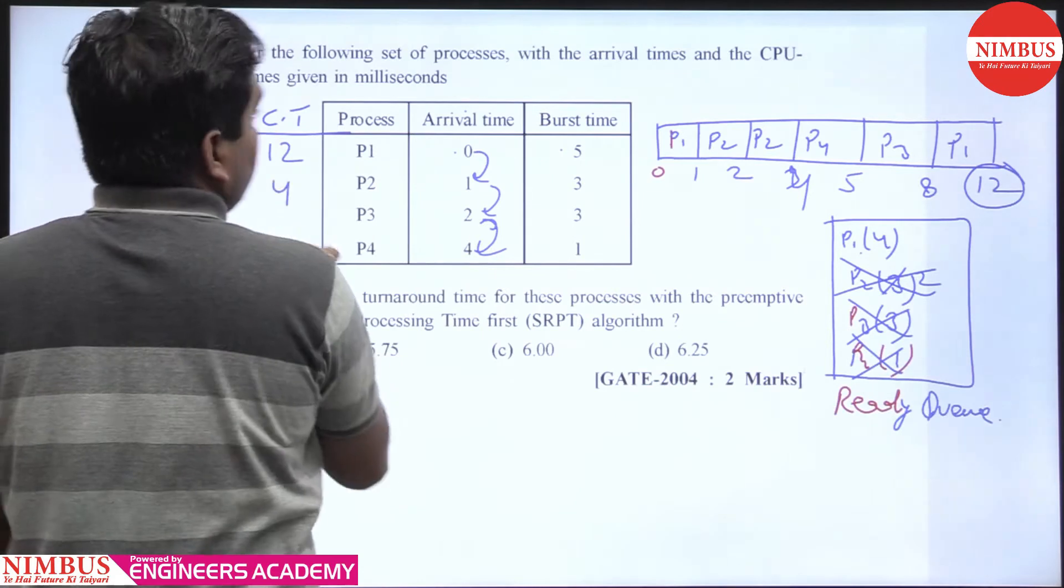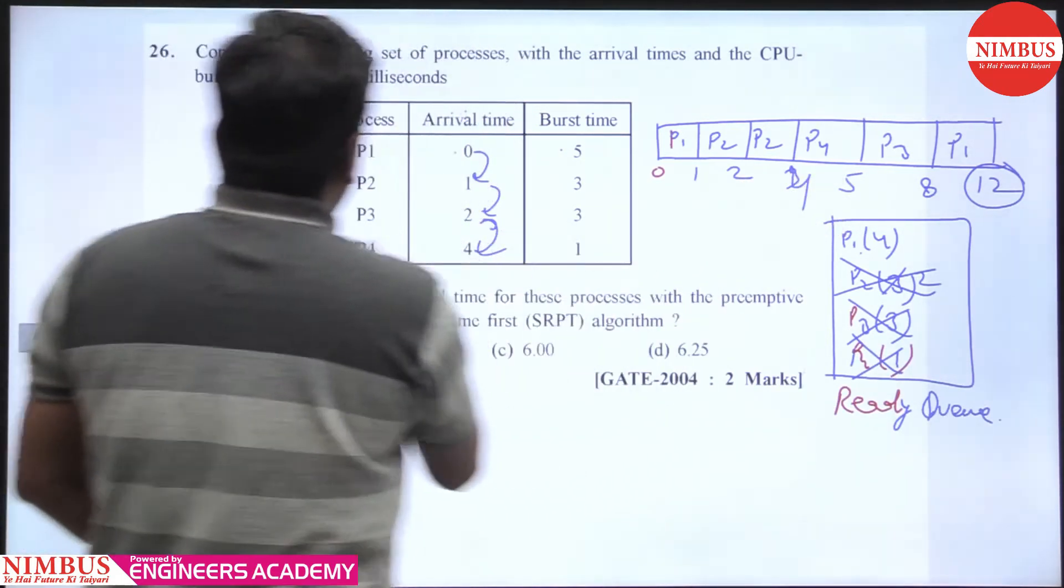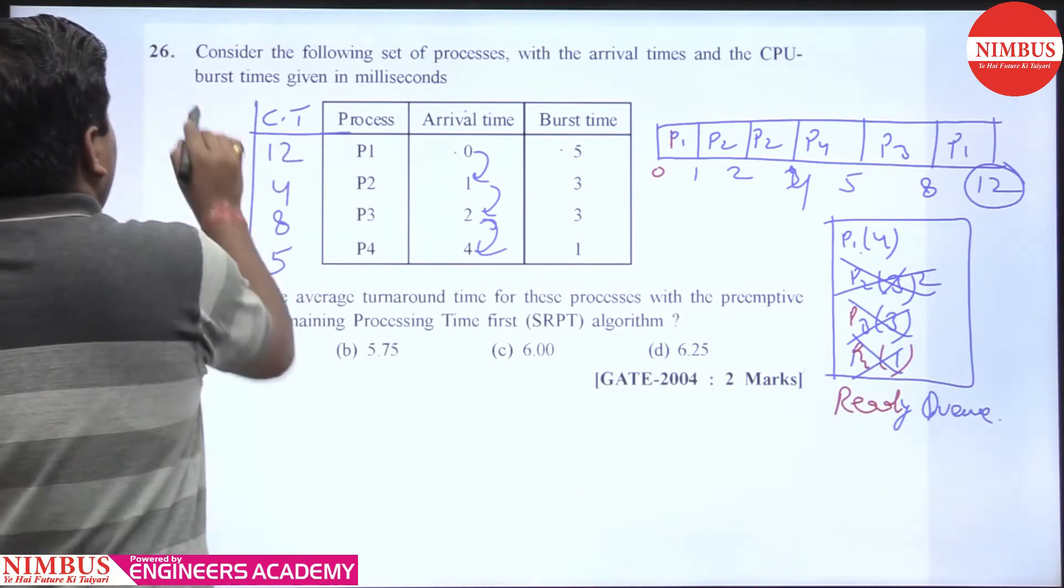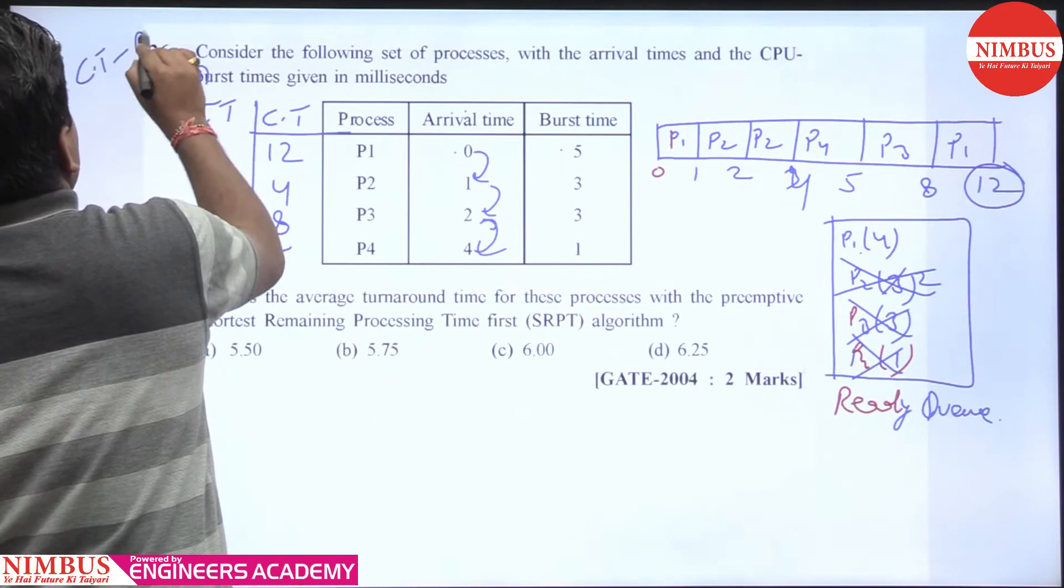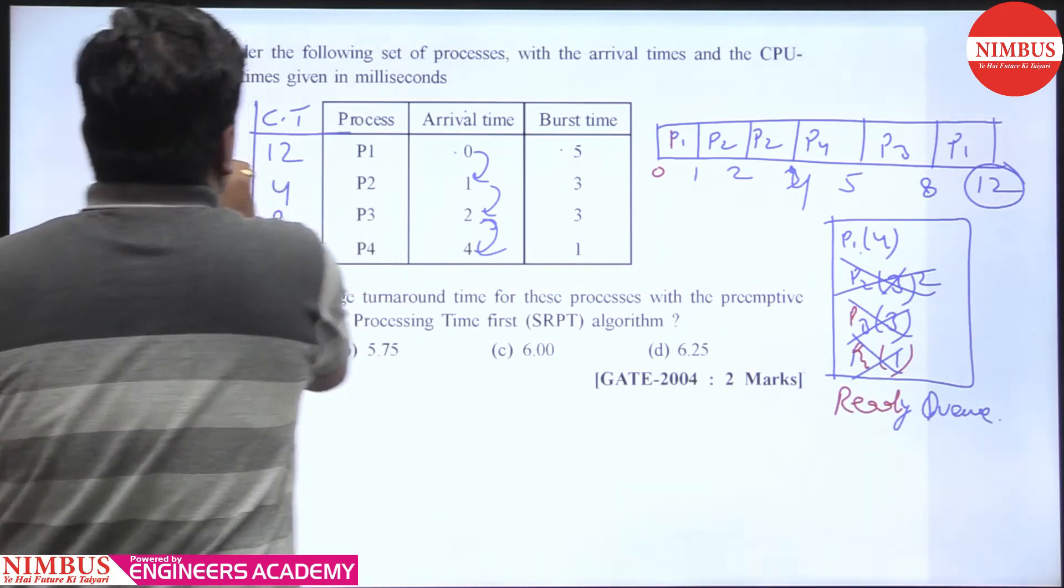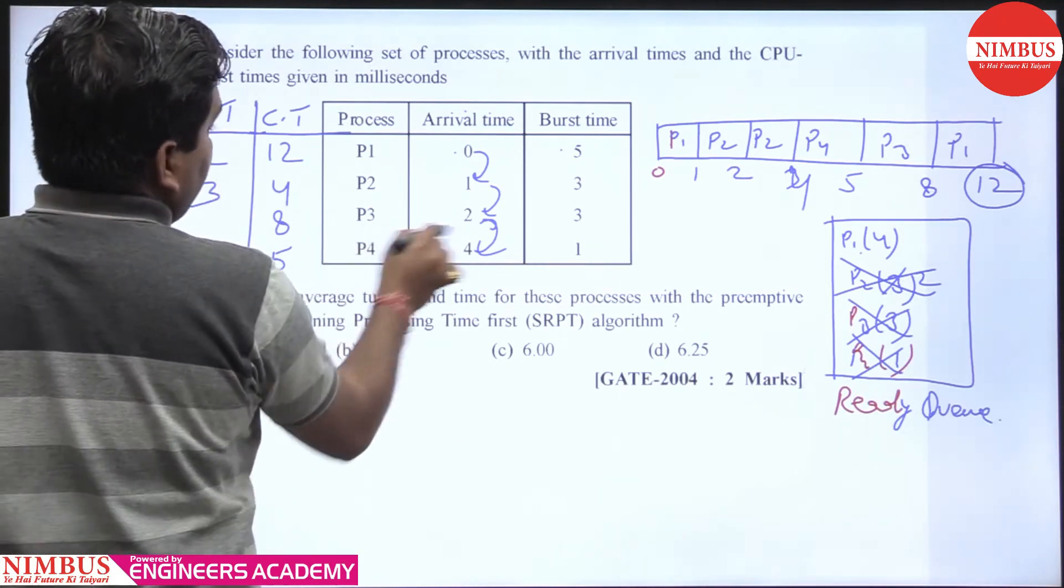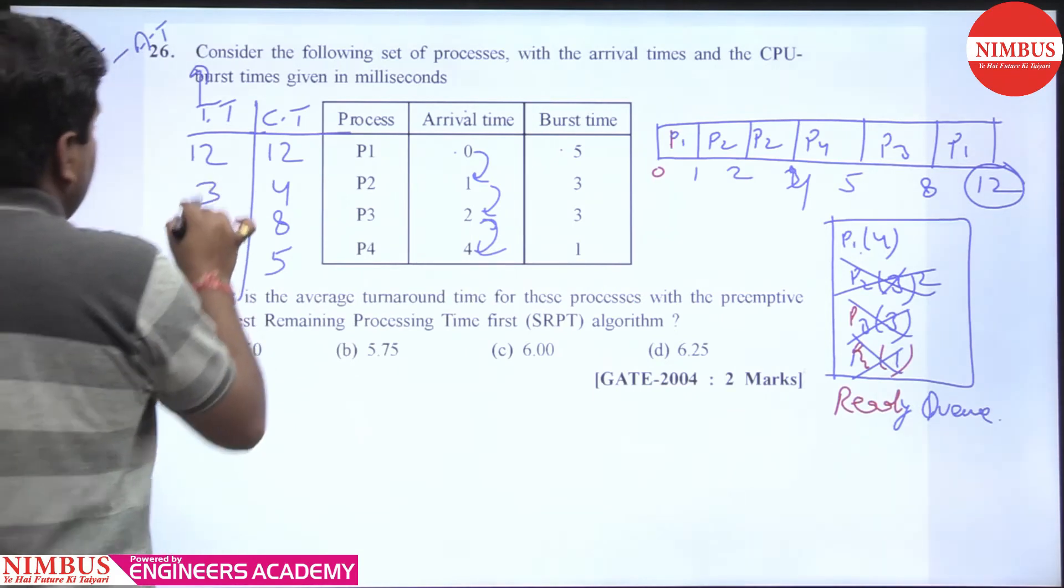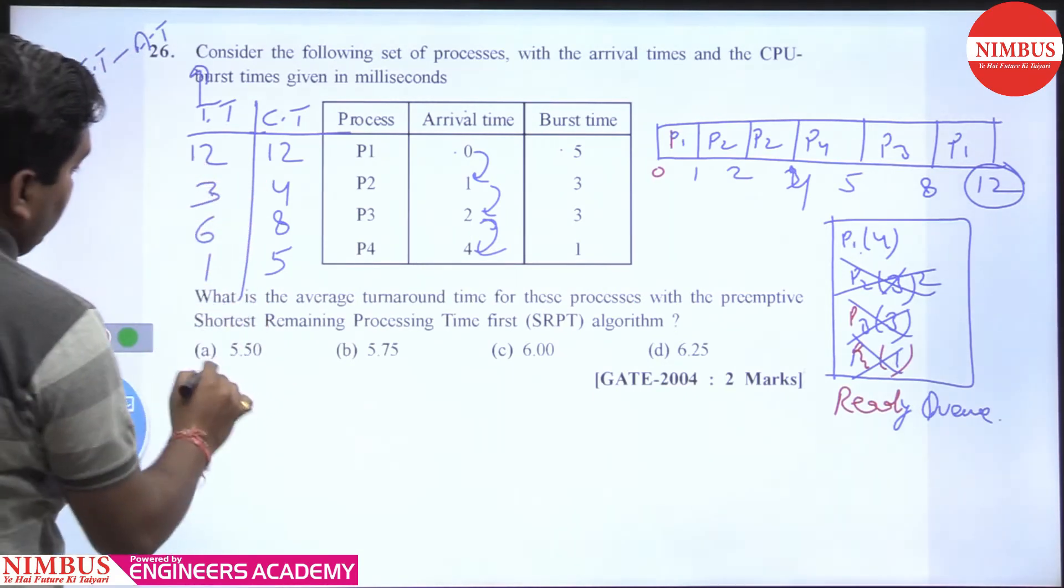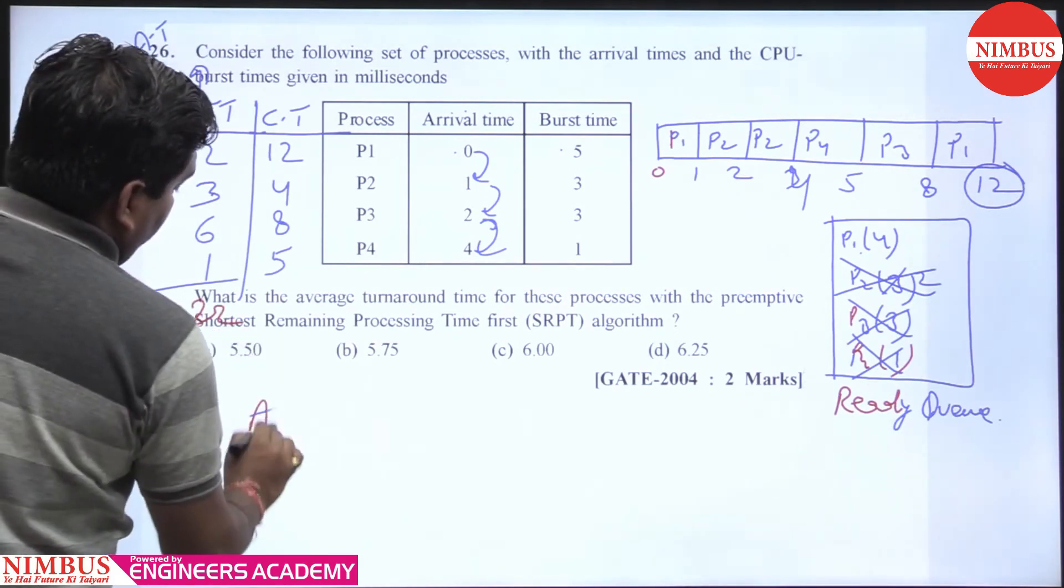What is the arrival time? 12 minus 0 is 12. 4 minus 1 is 3. 8 minus 2 is 6. 5 minus 4 is 1. Then 12 plus 3 is 15, plus 6 is 21, plus 1 is 22. Then what is the average turnaround time? 22 divided by 4, that is 5.5. So the answer is 5.5. Clear?